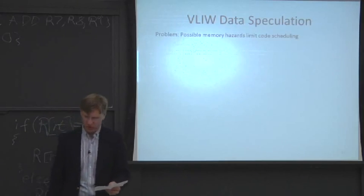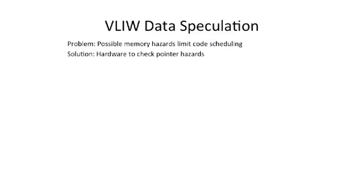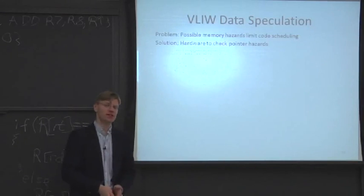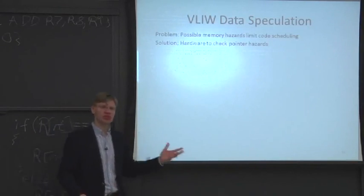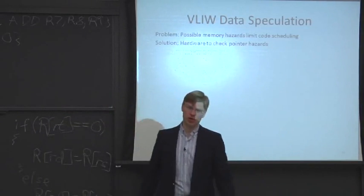The focus is on moving loads past stores. Our solution is to add hardware checks to guarantee that when we reorder a load and store, the two memory addresses are not the same. This is the same thing we did with the load-store queue and memory disambiguation in out-of-order processors. But we need to change the instruction set to handle this in a VLIW setting, versus the superscalar where it was all micro-architectural and below the ISA.